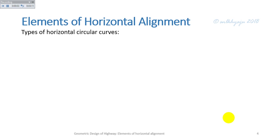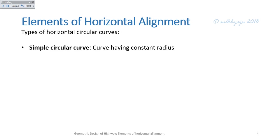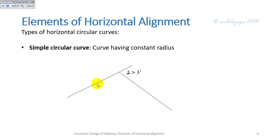Now, types of horizontal circular curves. First is the simple circular curve, which has a constant single radius. There is one tangent line and a second tangent. The deflection angle is delta. If the delta angle is greater than 3 degrees, we have to provide a radius of curve. The IP is the intersection point. The curve has a beginning of curve (BC), mid of curve, and end of curve (EC).